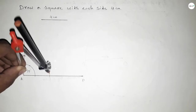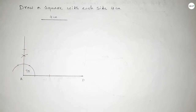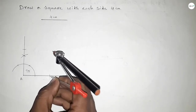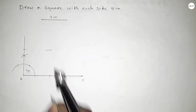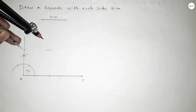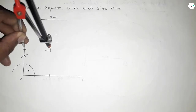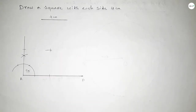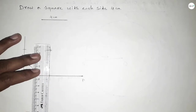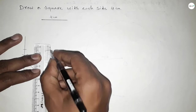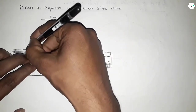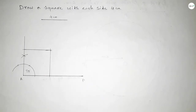Now taking the length 4 centimeters using the compass and putting it here. Cutting here with the same length, then putting the compass here and drawing an arc, cutting again so both curves intersect at a point.